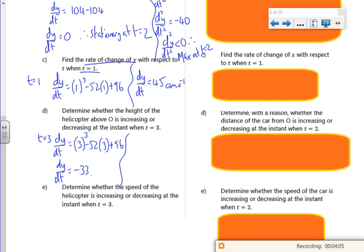dy/dt is 3 cubed minus 52 lots of 3 plus 96. So dy/dt is minus 23. So my dy/dt is less than 0, therefore, increasing.